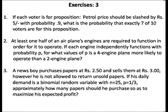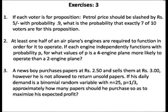Question 2: at least one half of an airplane's engines are required to function in order for it to operate. Assuming an even number of engines, half of them must function for the plane to fly. If each engine independently functions with probability p, for what values of p is a four-engine plane more likely to operate than a two-engine plane? Write down the probability of two or more engines working for a four-engine plane, and one or more for a two-engine plane, then find the inequality and the values of p satisfying it.